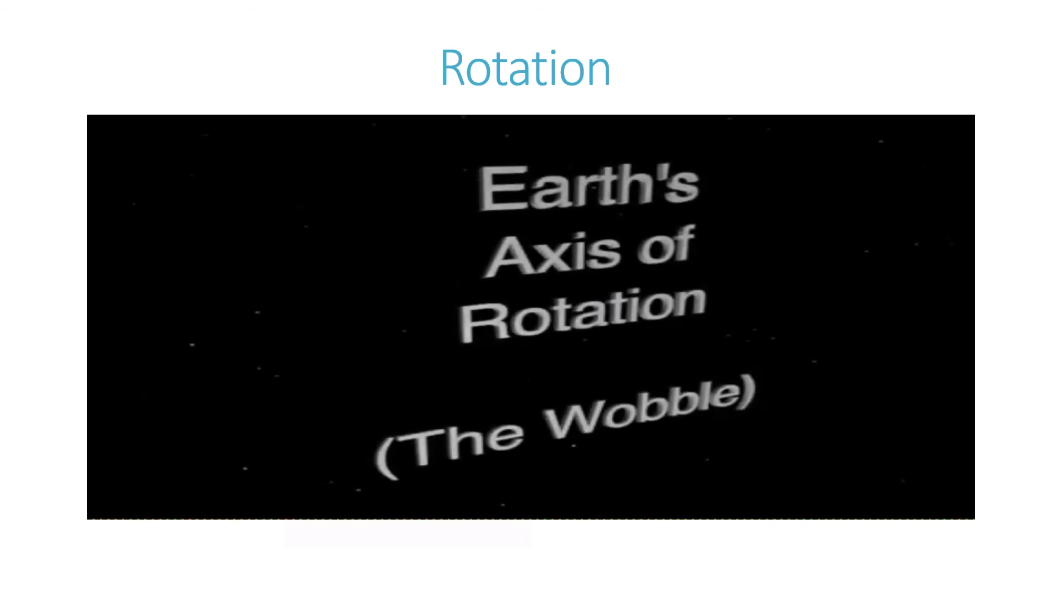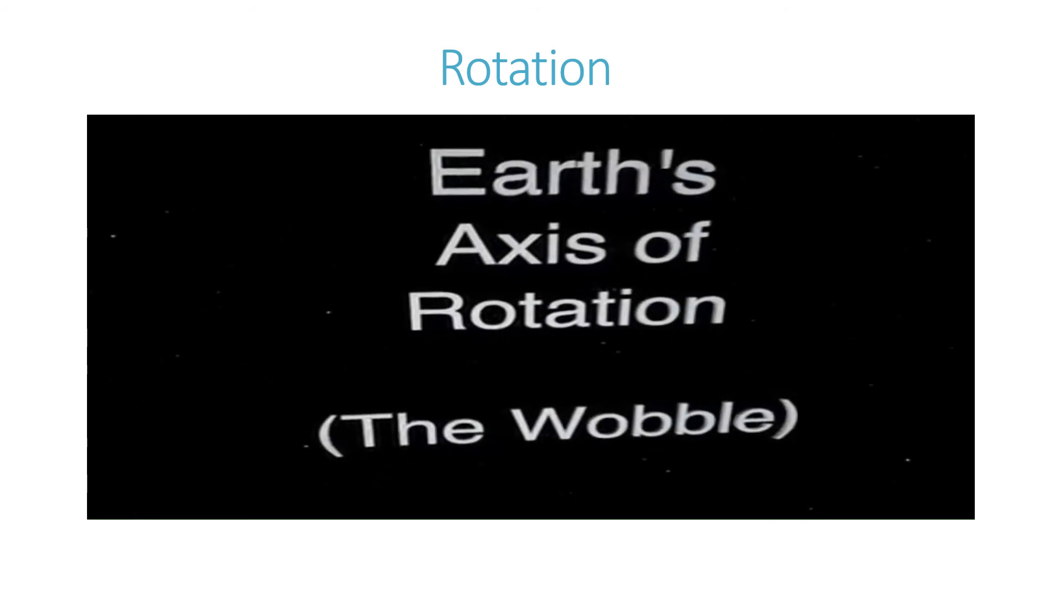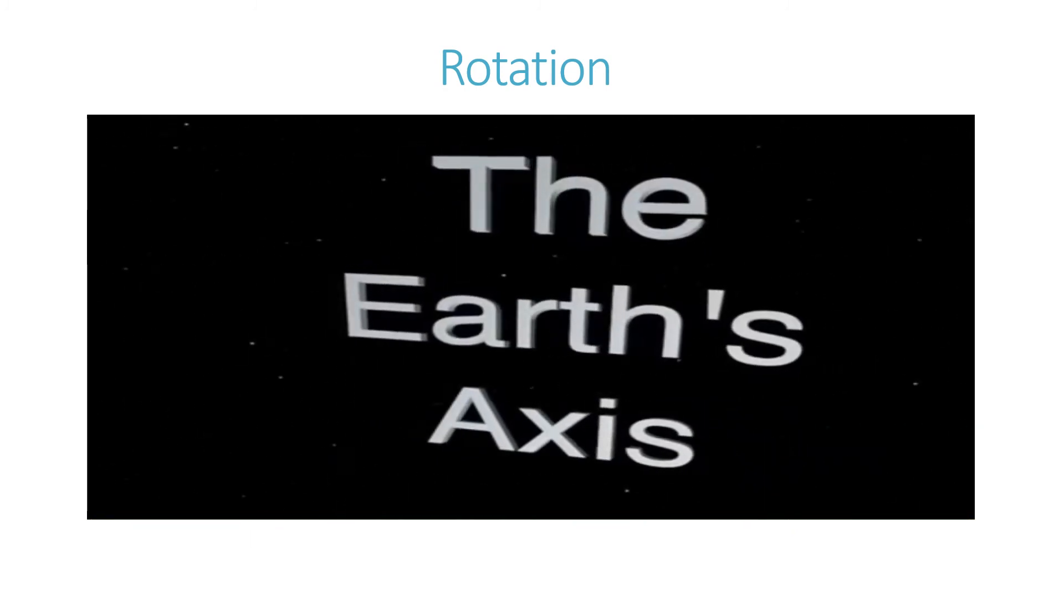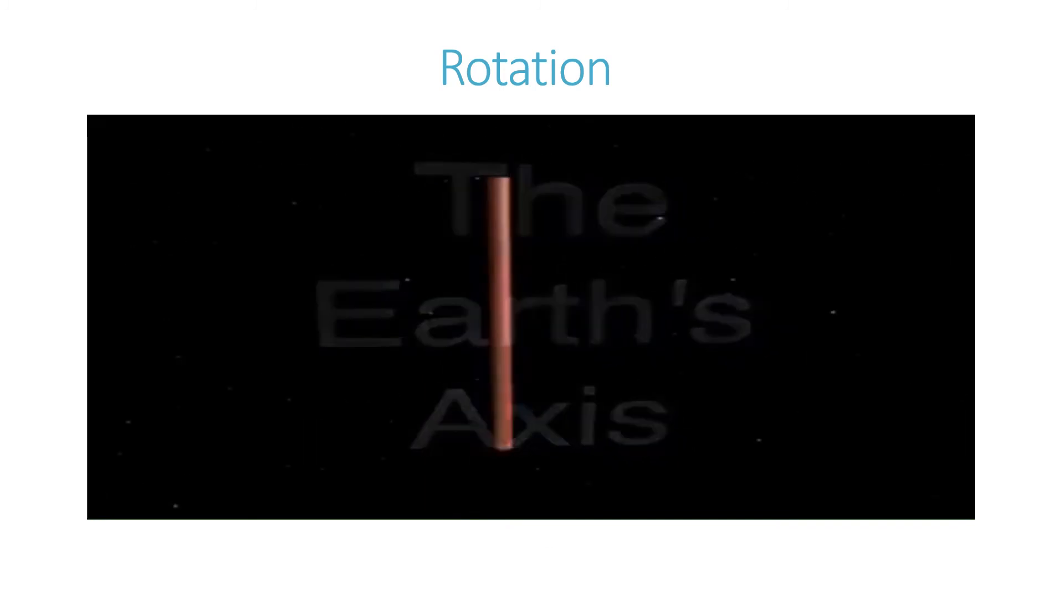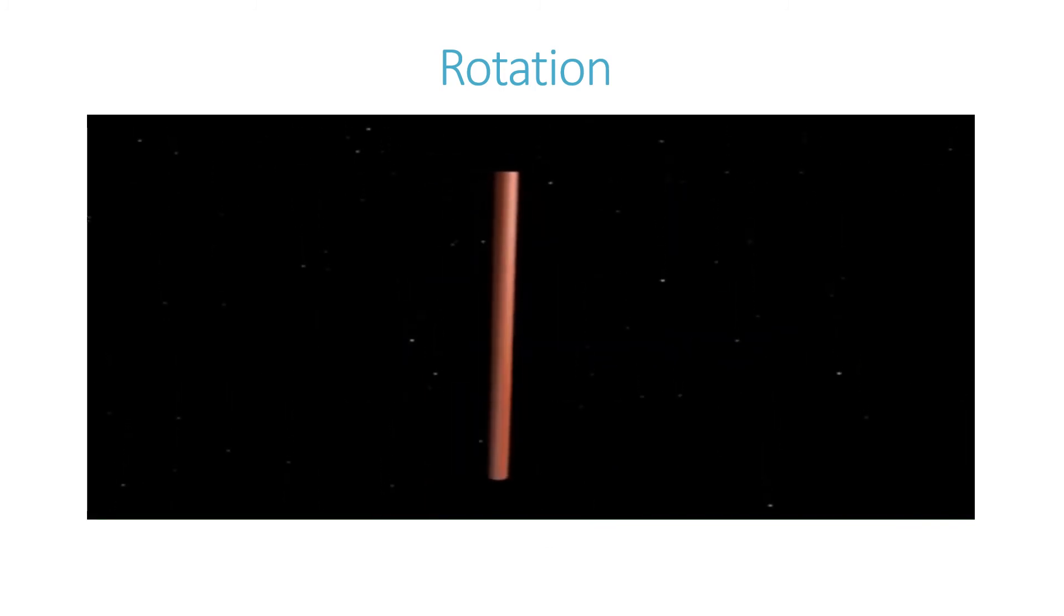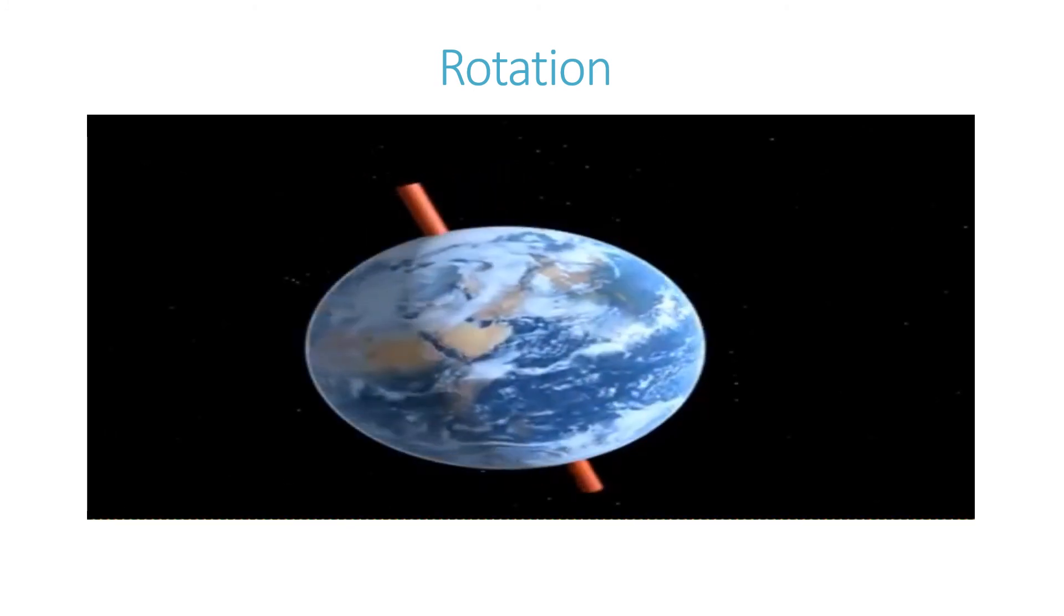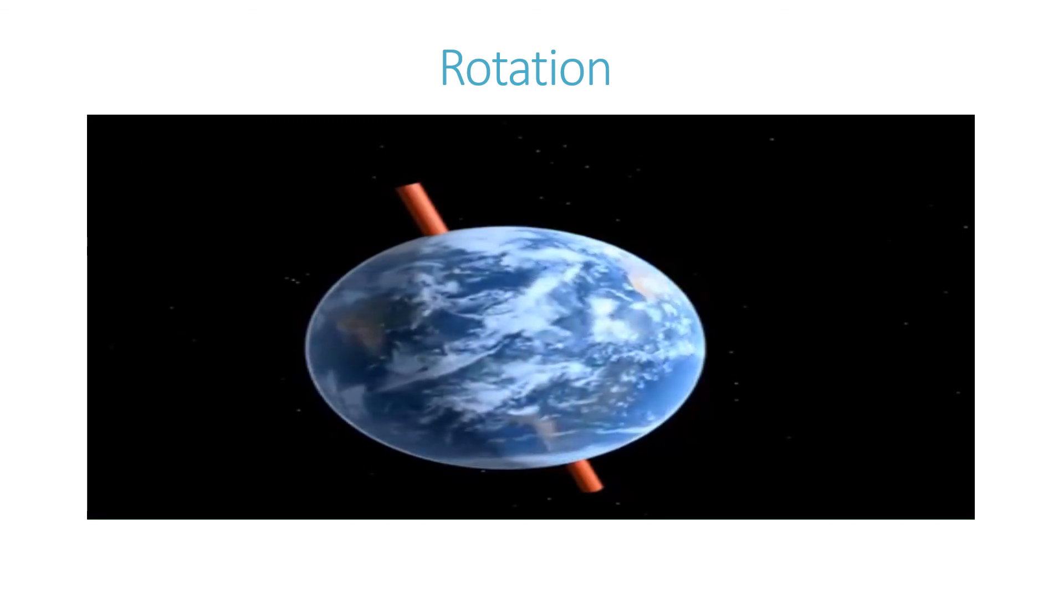Let us revise again what is rotation. The earth's axis of rotation or the wobble effect. Let's begin by talking about the earth's axis. The earth rotates on an axis. The axis is tilted at an angle of 23.5 degrees. The earth rotates around its axis once a day.